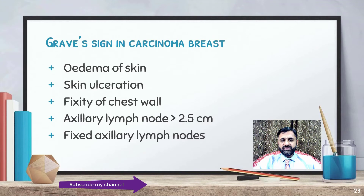Grave signs in carcinoma of the breast include edema of the skin, skin ulceration, fixity to the chest wall, axillary lymph nodes greater than 2.5 cm, and fixed axillary lymph nodes.